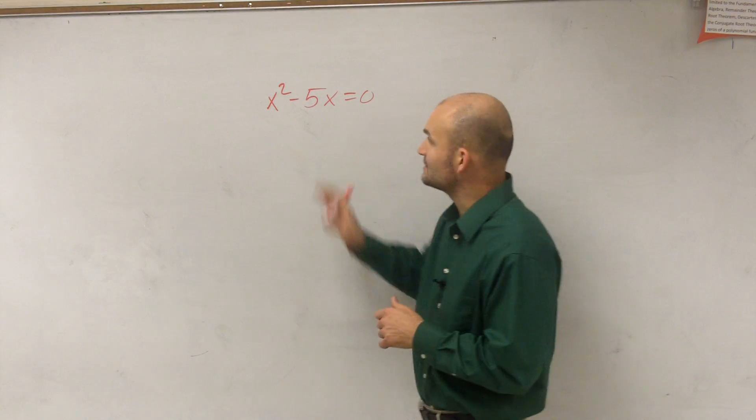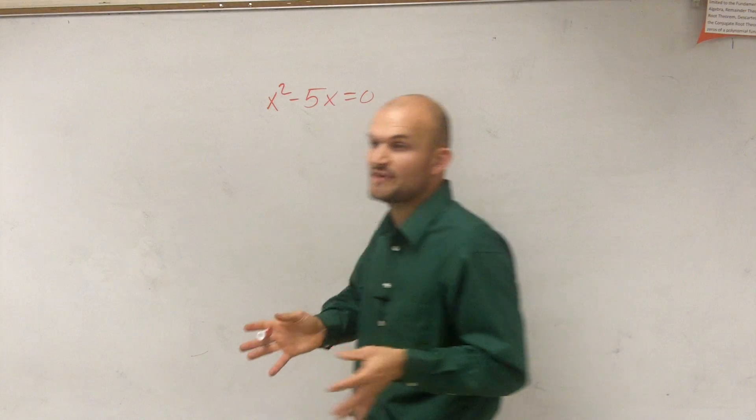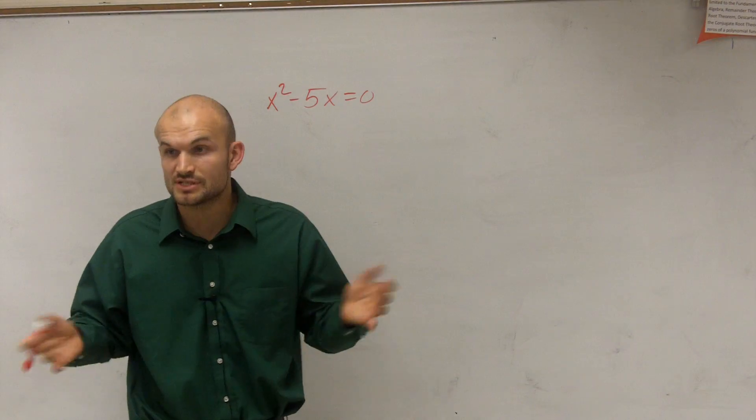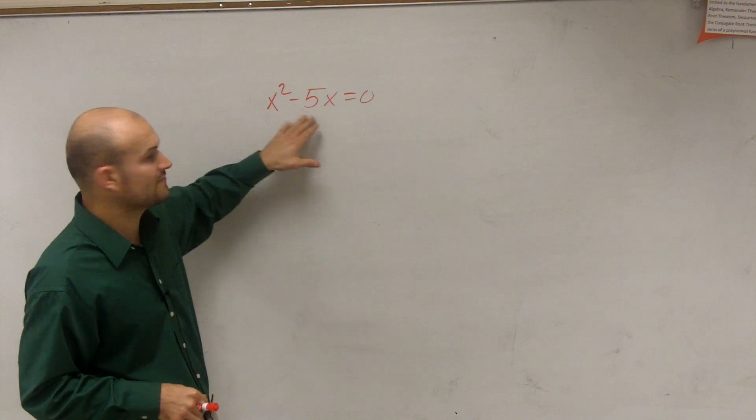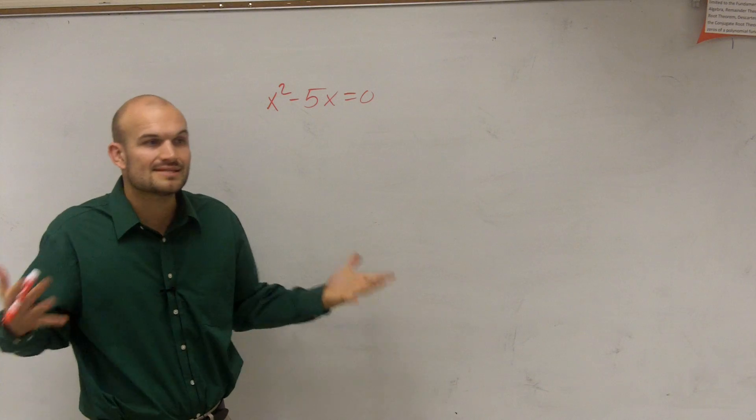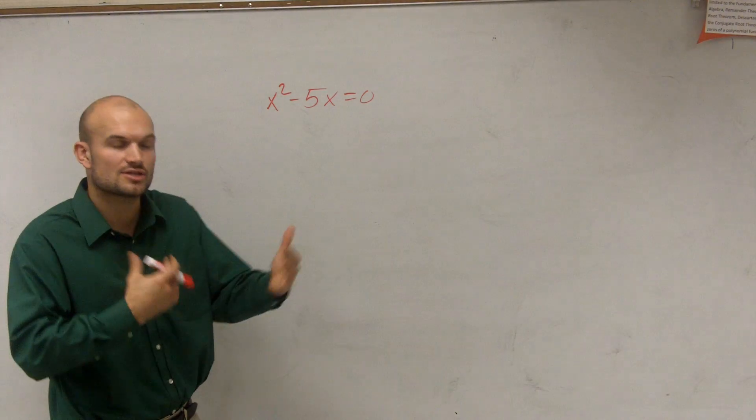So right now what we have is x squared minus 5x equals 0. And what we want to do is we want to factor this. Now the next type of factoring we looked at is factoring by using distributed property. So what we did was we found the GCF of our terms and we factored it out. And that's exactly what we're going to do with this, but we're going to add an extra step because they're actually asking us to solve.